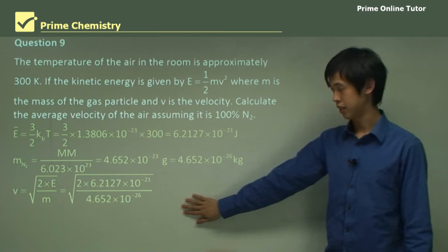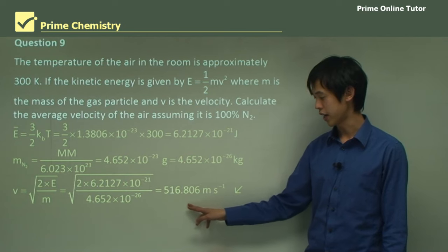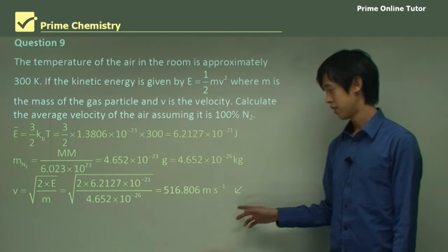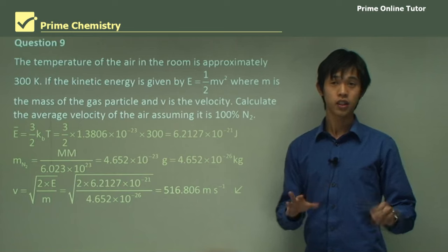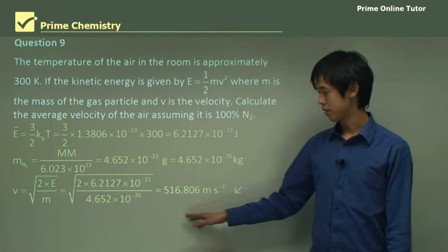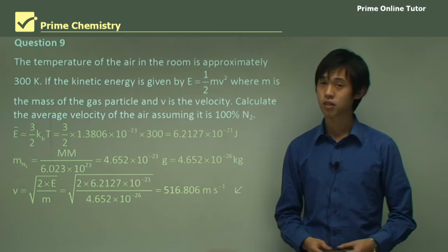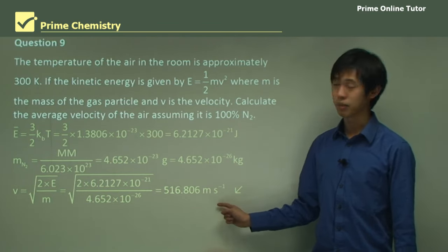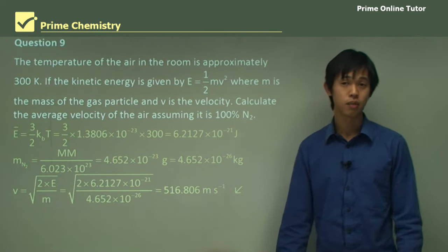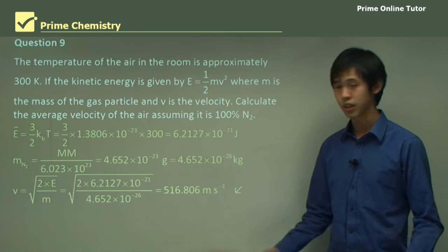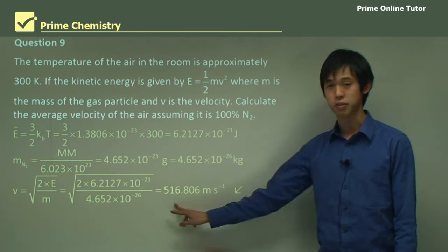Putting in all the numbers, we get 516.806 meters per second. So the particles of N₂ in a 300 Kelvin room — about 27 degrees Celsius — are moving at about 516 meters per second, which is almost twice the speed of sound. That's incredibly fast, and it actually does happen. The particles in a gas can move extremely quickly, and when they collide with things they hit quite hard — but remember their mass is very small, which allows them to travel very quickly.